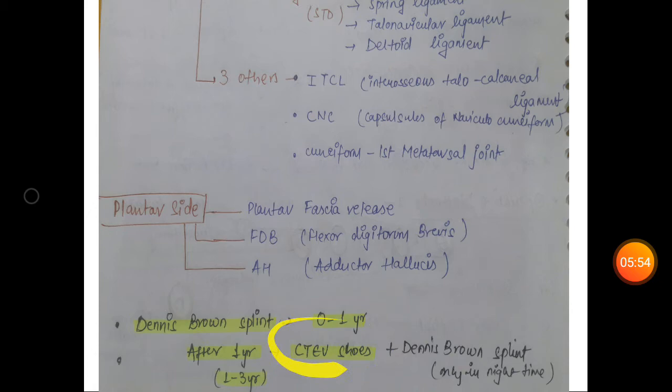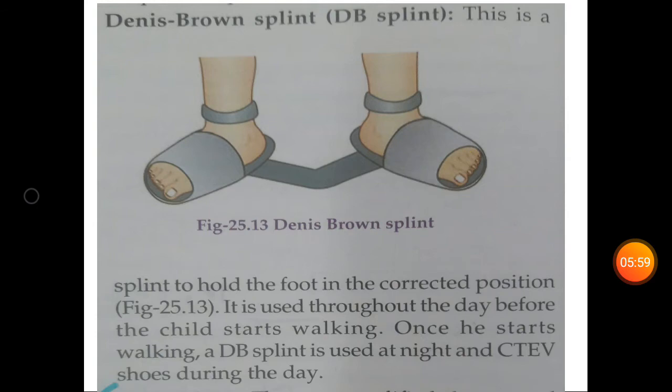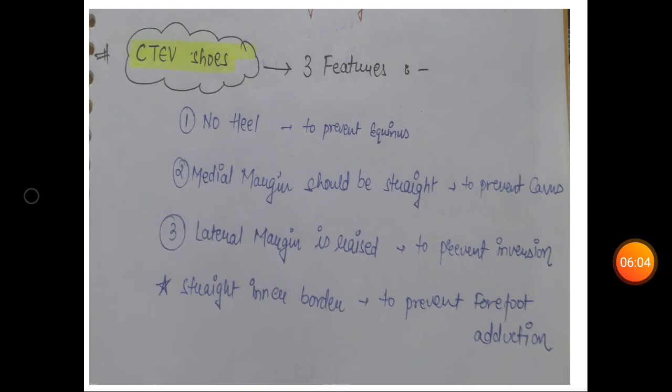In between one to three years of age, CTEV shoes are used during the day and Dennis Brown at night. CTEV shoes have three important features: no heel to prevent equinus, middle margin straight to prevent cavus, little margin raised to prevent inversion, and straight inner border to prevent forefoot adduction.